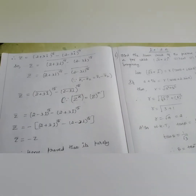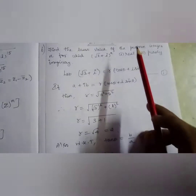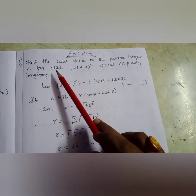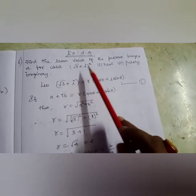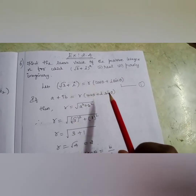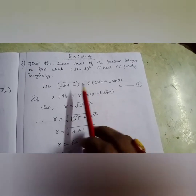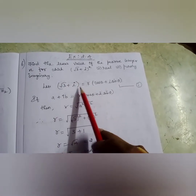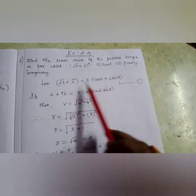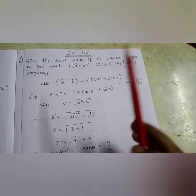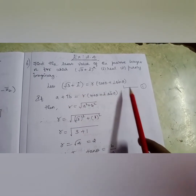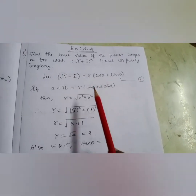This is how you have to prove this. Exercise 2.4, sixth sum: find the least value of the positive integer n for which (√3 + i)^n becomes real and also purely imaginary. This is also a very important 5-mark question. First, write (√3 + i) in polar form: x + iy is rectangular form; r(cos θ + i sin θ) is the polar form. I will name it as equation 1.